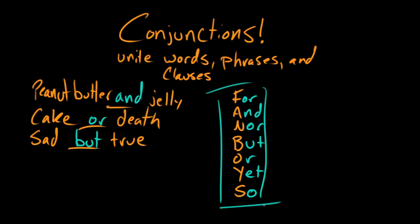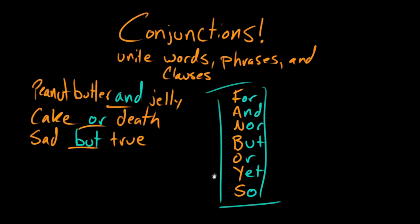We'll go through how each one of these are used over in the next screen. Follow me downstairs. So we've got for, and, nor, but, or, yet, and so. And each of them have a different basic function. So let's review them.